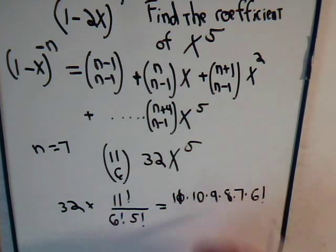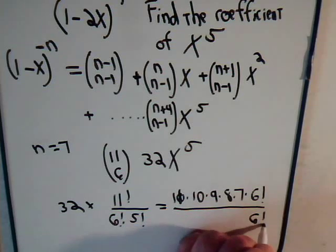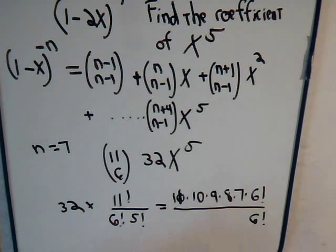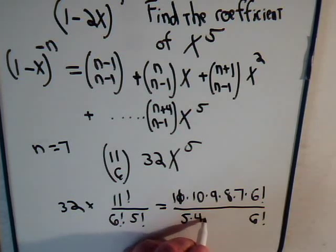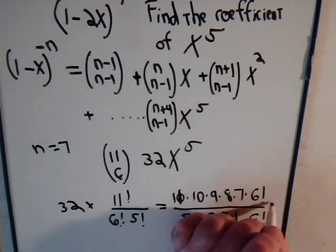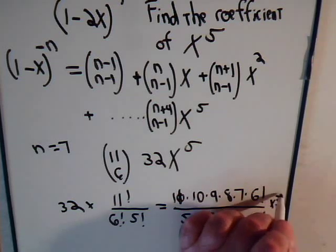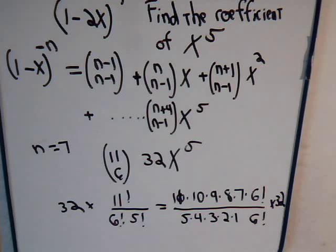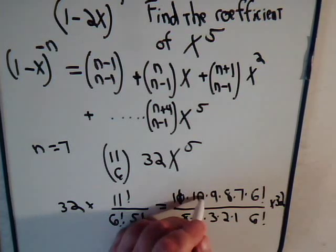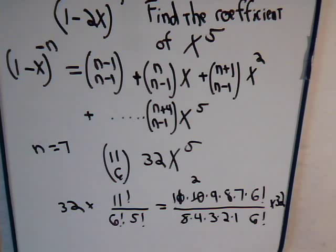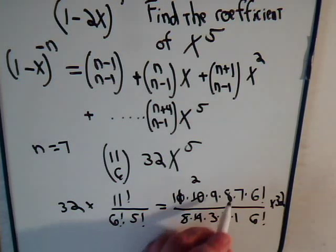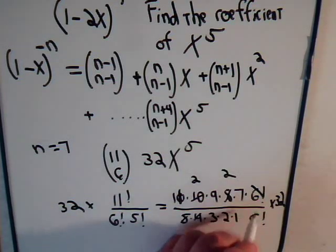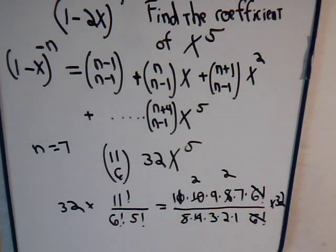And at this point, we can just say times 6 factorial divided by 6 factorial times 5 factorial. And this is multiplied by 32, and let's see, this goes into here 2 times. This will go into 8 two times. These cancel out.